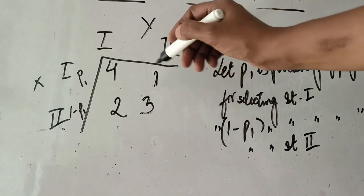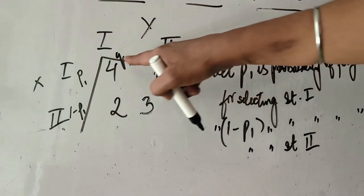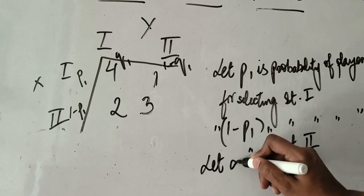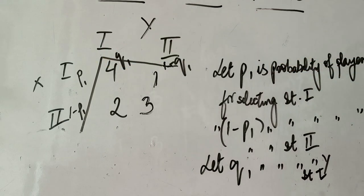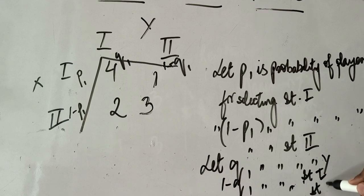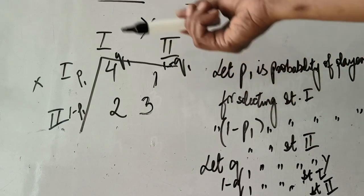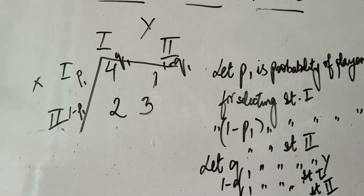Similarly, for player Y it will be named q1 and 1 minus q1. We write: let q1 be the probability of player Y for selecting strategy number 1, and let 1 minus q1 be the probability of player Y for selecting strategy number 2. So these four lines clarify the probabilities we have presumed for both players.